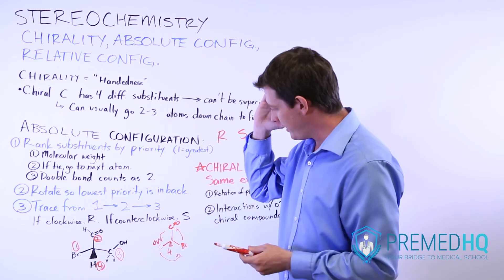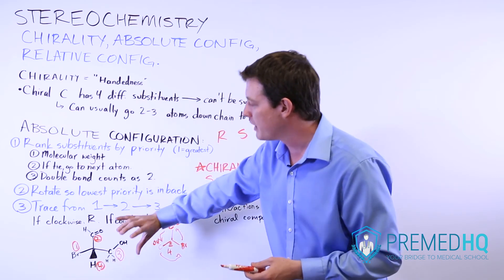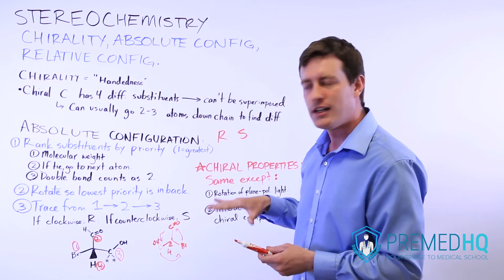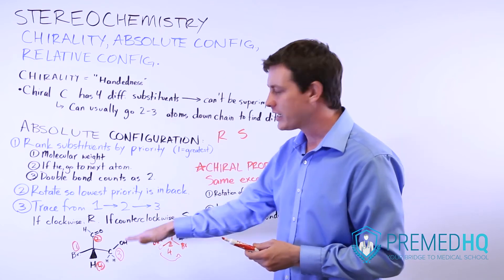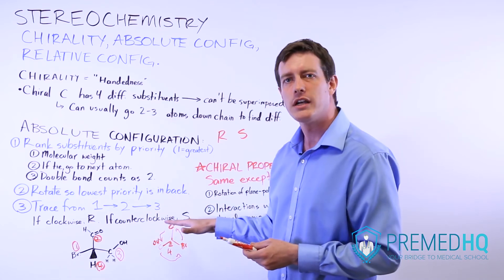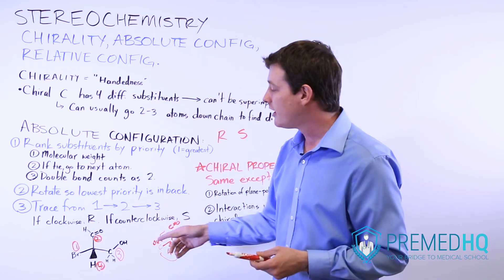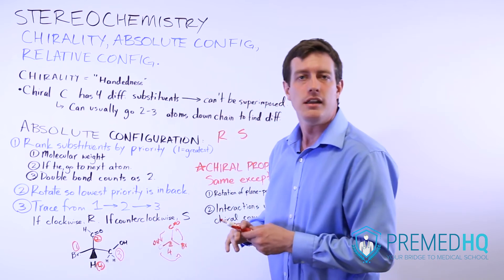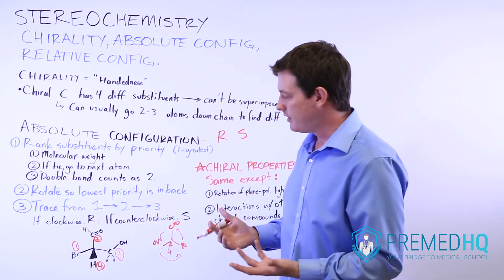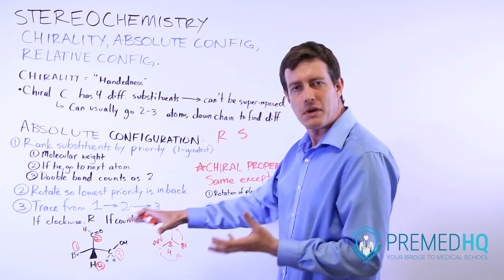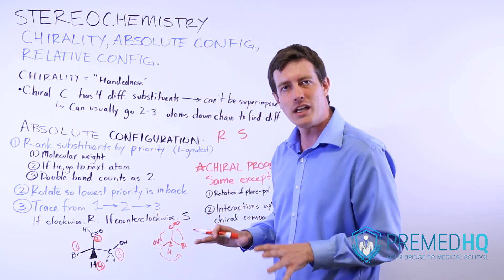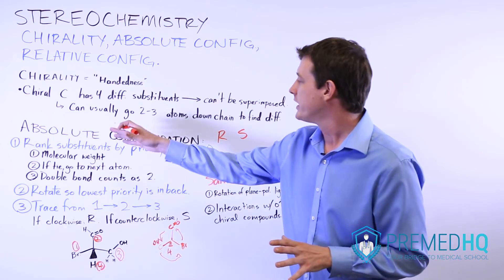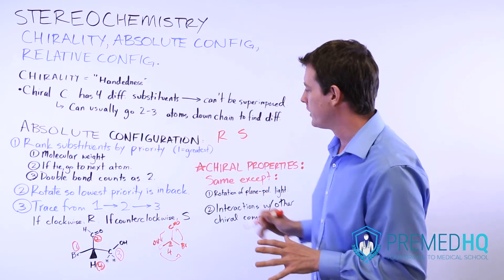If you can spatially reorient the compound in your mind and imagine rotating it, that's probably the best approach. But if not, just realize that if the lowest priority substituent is facing you, then the rules are basically reversed. That's a good way to think about chirality and labeling absolute configuration.